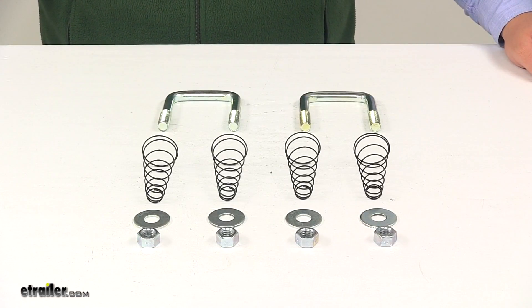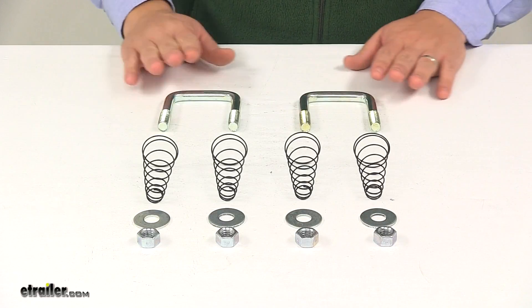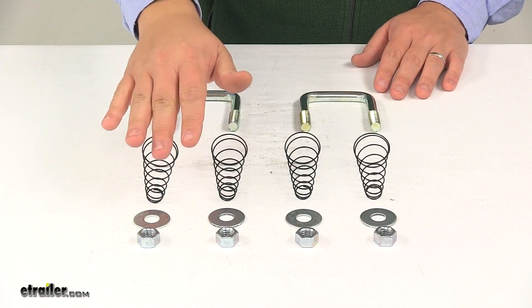Today we're taking a look at the replacement U-bolt safety chain kit for hide-a-goose gooseneck hitches. This kit comes with new U-bolts, springs, flat washers, and lock nuts.